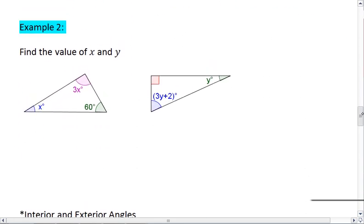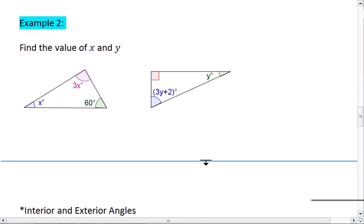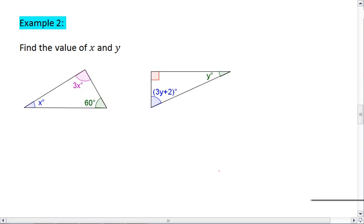So, let's look at an example. In the example below, you are given two different triangles. We'll say triangle ABC and triangle DEF.